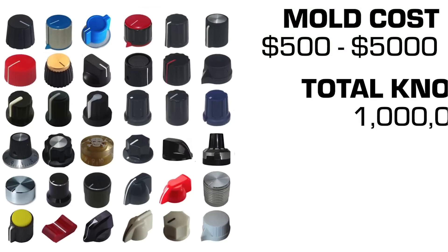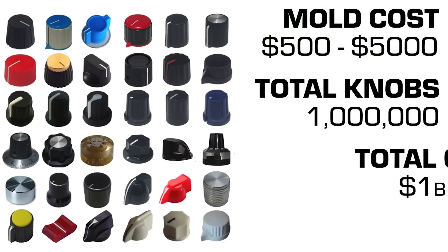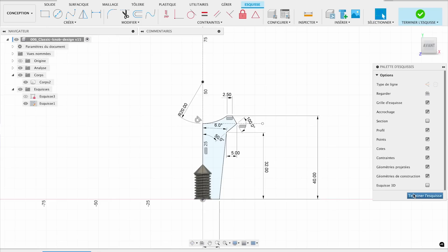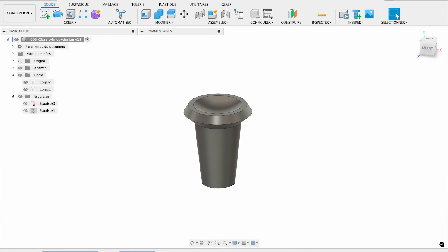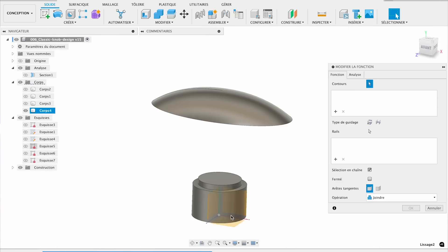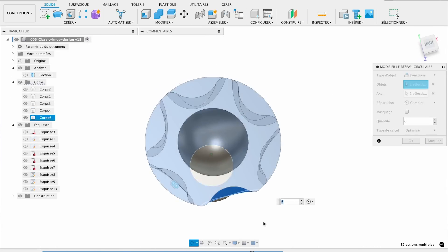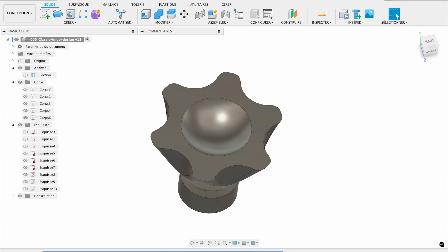So if you have a million of these out there, you've spent almost a billion to five billion dollars creating all the molds for all these knobs in the world. All those molds are now obsolete because this knob appeared without any molding costs at all. So the fact that knobs are so high mix and so high variance lends themselves very substantially to 3D printing.